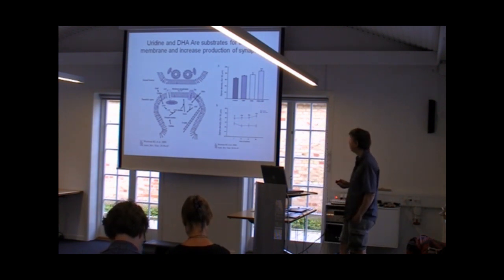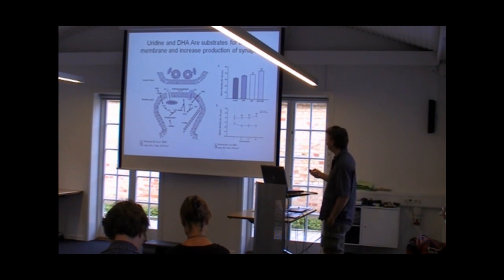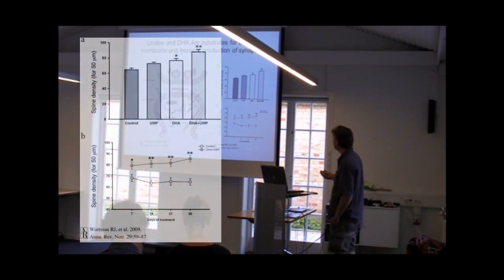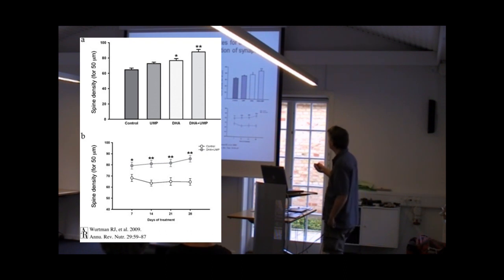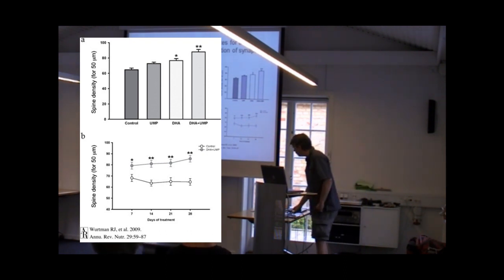What is also very clear is that if you give rats a diet containing DHA and uridine, you will see that the number of spines which are being created in the brain actually goes up. So here you have the control situation. Here you have uridine alone. Here you have DHA. And here you have DHA plus uridine. And you see that the number of contacts between different nerve cells actually goes up in these rats. So that's important in itself, I would say.